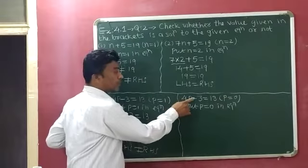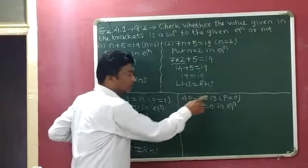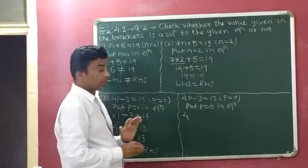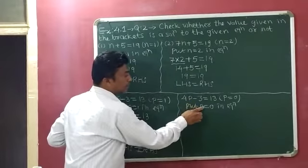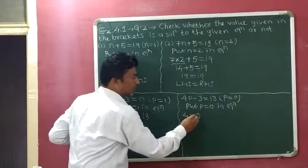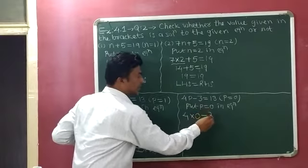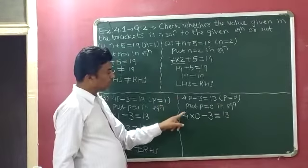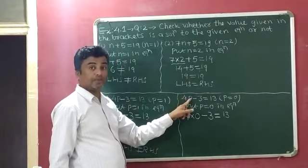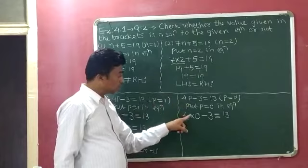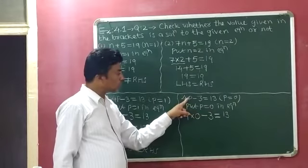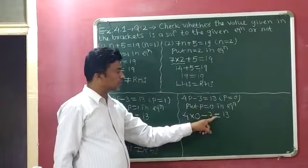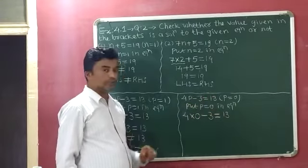Our equation is 4P minus 3 equals 13. Between 4 and P, no sign is given, so we write a multiplication sign. Since P equals 0, instead of P we write 0. So we have 4 multiplied by 0 minus 3 equals 13. Now, 4 multiplied by 0 gives 0, so we get 0 minus 3 equals 13, which gives minus 3 equals 13.